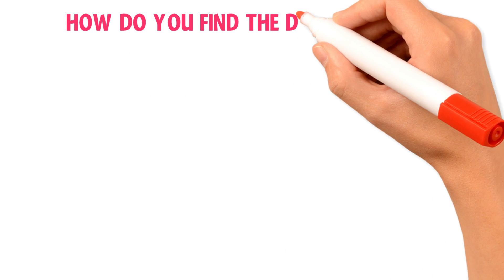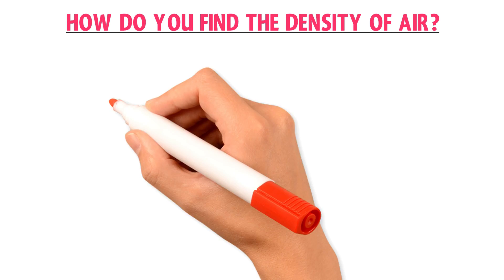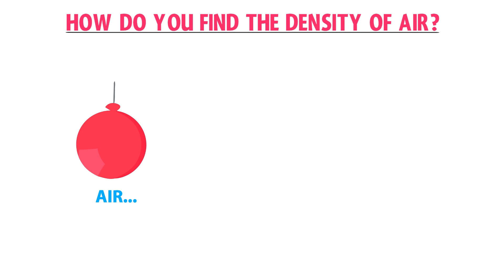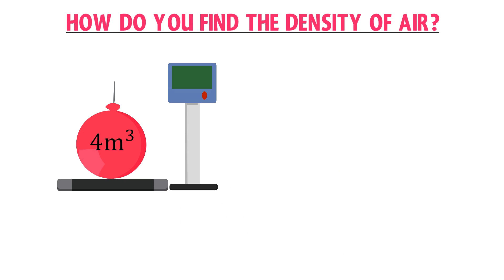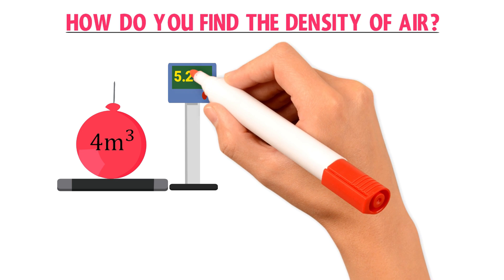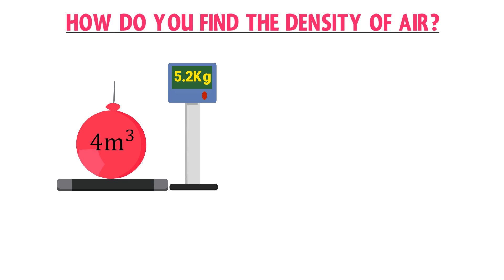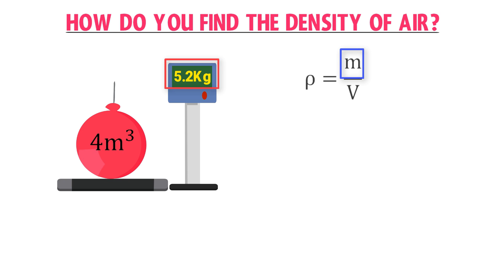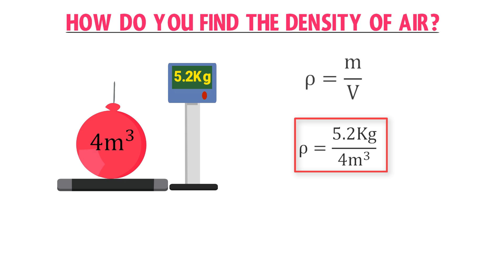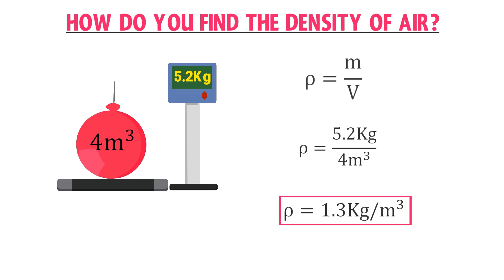Now let me teach you how to find the density of air. Consider a balloon filled with air. Let the volume of the balloon filled with air be 4 cubic meters. Place this balloon on the digital balance; let the mass of the balloon filled with air be 5.2 kg. We know that density rho equals mass upon volume. Here the volume of air in the balloon is 4 cubic meters and the mass of air is 5.2 kg. Thus rho equals 5.2 kg upon 4 cubic meters, giving 1.3 kg per cubic meter.